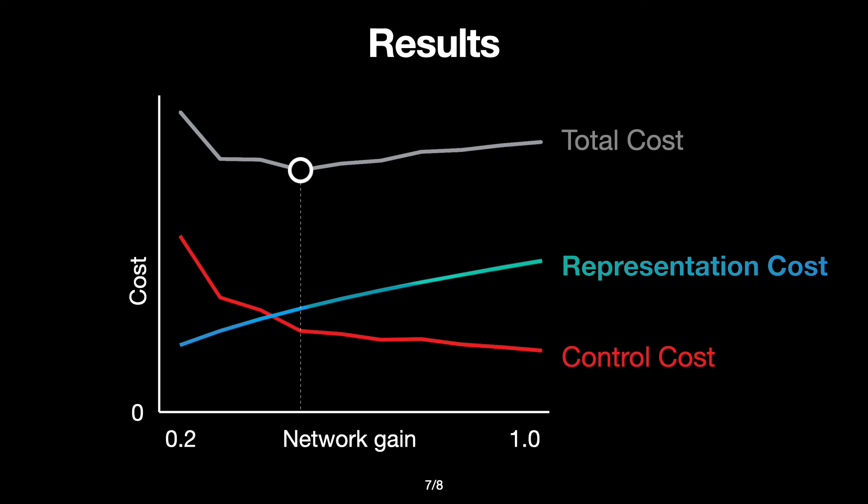We also consider an active sensing version in which the sensory gain can change over time. In this setting, the agent can obtain more utility overall by allocating more spikes in states where making mistakes is highly punished. This is a strategy often observed in behavioral experiments and may provide a prediction for arousal signals reflected in neural activity and pupil dilation.